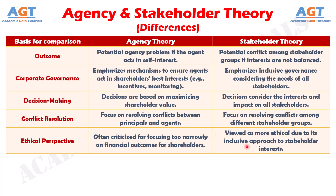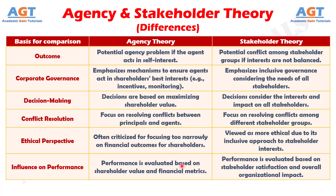Number eleven: agency theory uses financial metrics for performance evaluation, while stakeholder theory uses a broader set of criteria including social and stakeholder impacts.